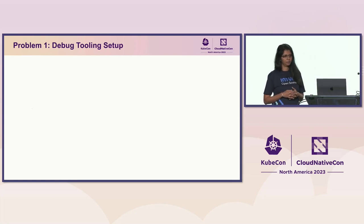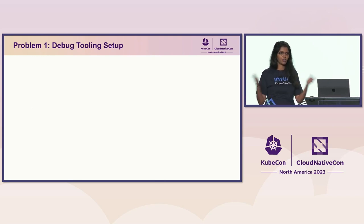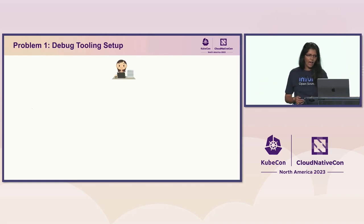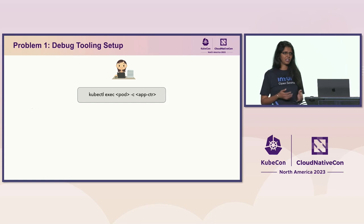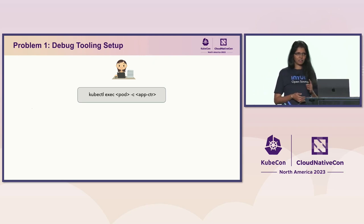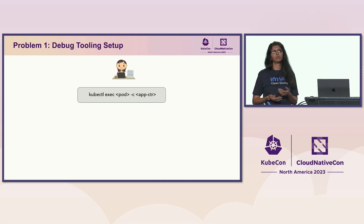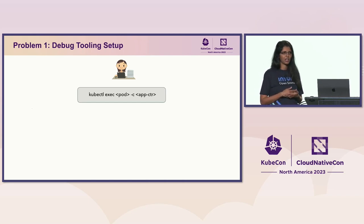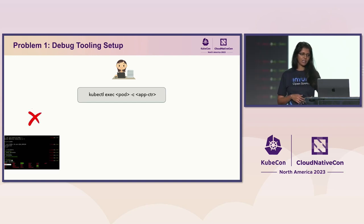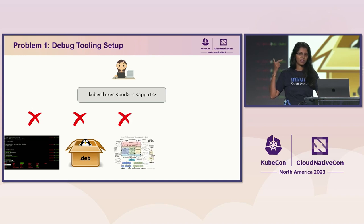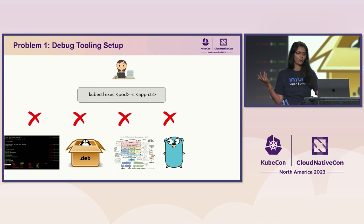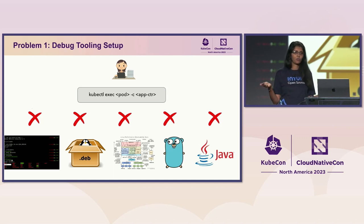The first problem is debug tooling setup. All of us have our favorite set of debugging tools — a Swiss Army knife of tools. If you are a Kubernetes user, you can exec into the pod's main app container and start debugging. But most organizations have a security best practice that hardens app container images. So when you actually try to exec into the pod, you realize you have no shell, no package manager, no tooling, and no Java or Golang or any other language-specific tooling available. That's the first friction we encountered.